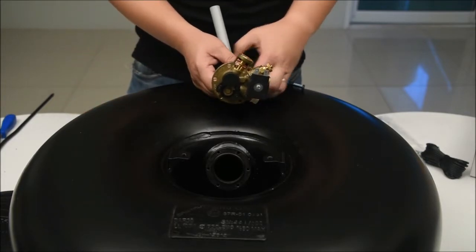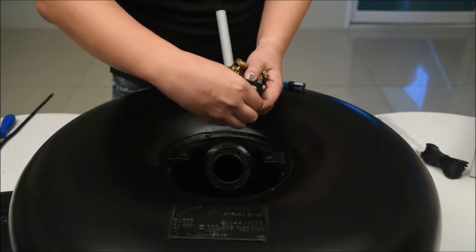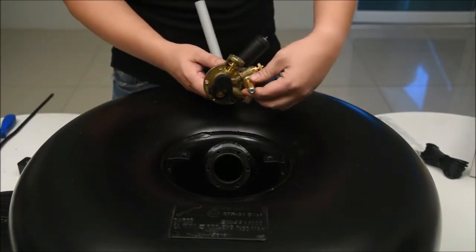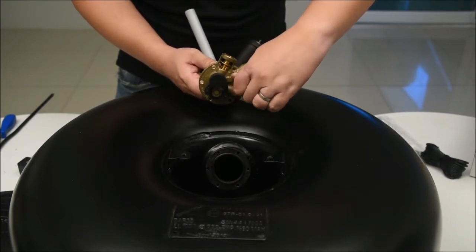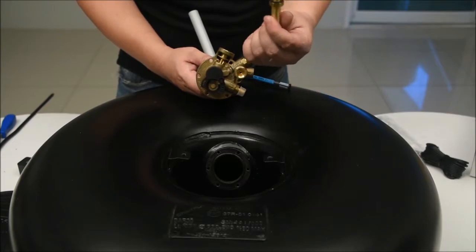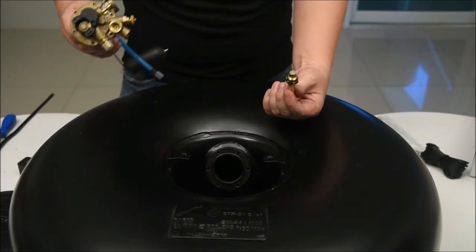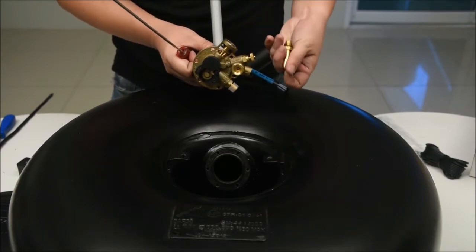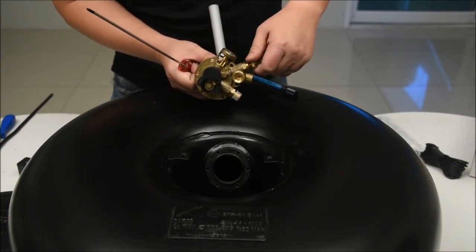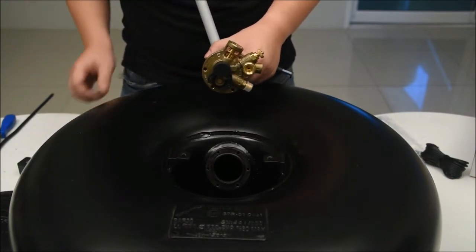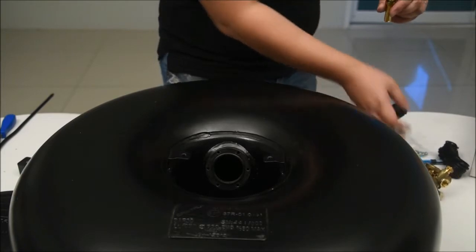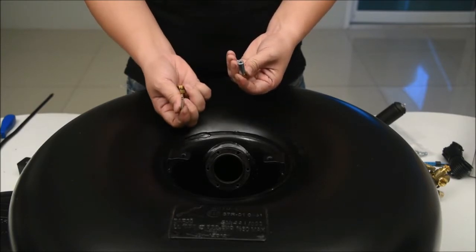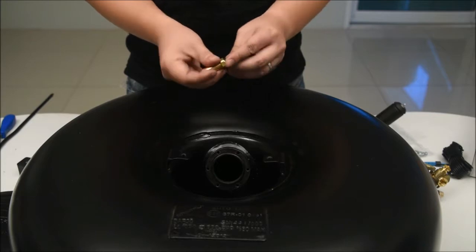We are going to disassemble the automatic valve and check if it's working properly. First take out the coil and then take out the plunger to check inside. Inside there is a plunger and spring. It must be clean and moving properly. If it is second hand multivalve used with dirty LPG make sure the plunger is clean. The plunger should not stuck on the body.